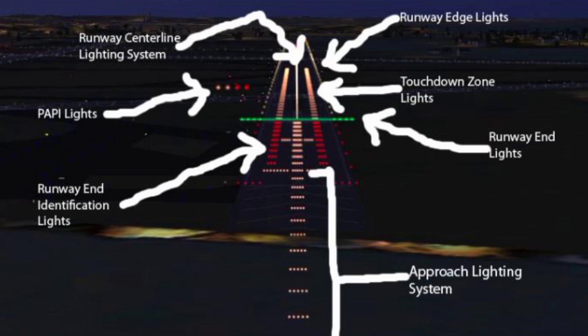Visibility enhancement: during low visibility conditions such as fog, heavy rain, or darkness, centerline lights enhance the visibility of the runway centerline. This helps pilots maintain a straight and accurate path during takeoff and landing, reducing the chances of runway excursions. Level perception: the alignment of centerline lights assists pilots in gauging the aircraft's position relative to the runway surface, especially during the critical phases of landing flare and takeoff rotation. This visual reference aids in maintaining proper aircraft altitude and pitch.